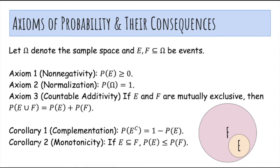The second corollary is monotonicity, that says that if E is a subset of F, then the probability of E is less than or equal to probability of F, which makes sense because E is completely contained inside F.